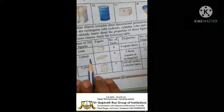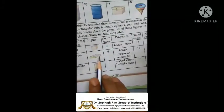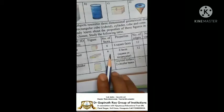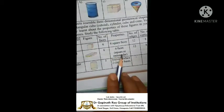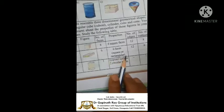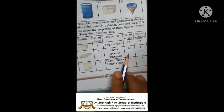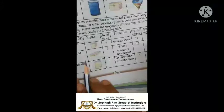Cuboid — cuboid means just like a rectangular shape. Here also, faces are 6. Six faces, square or rectangular, same. Number of edges: 12. Number of vertices: 8.